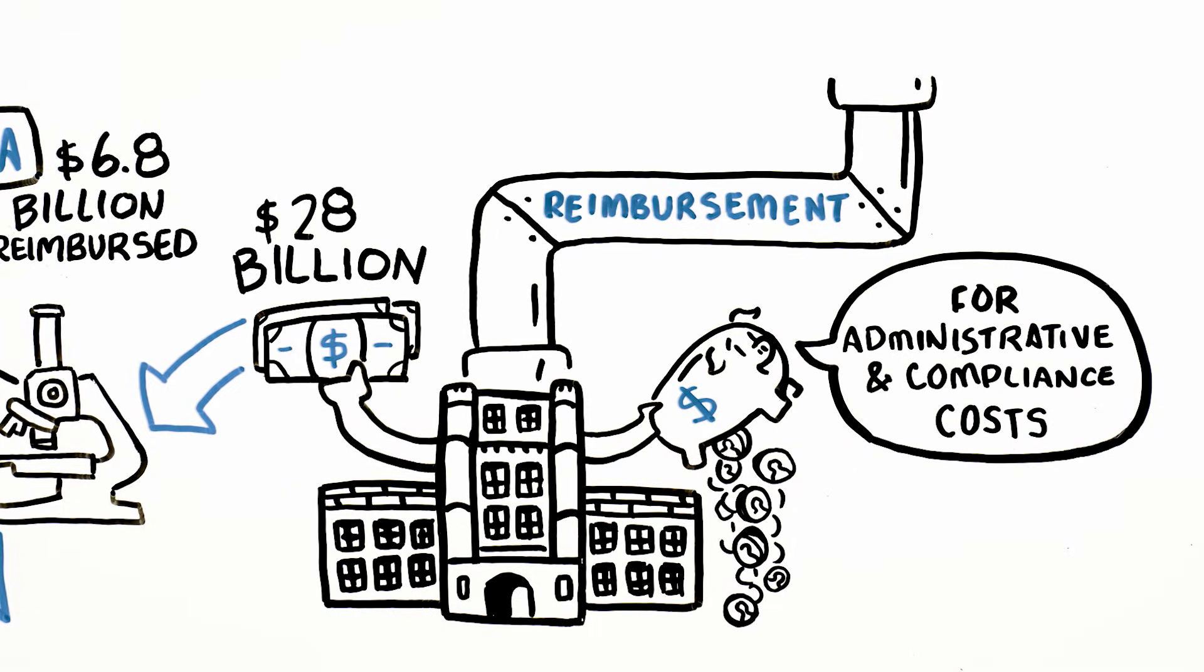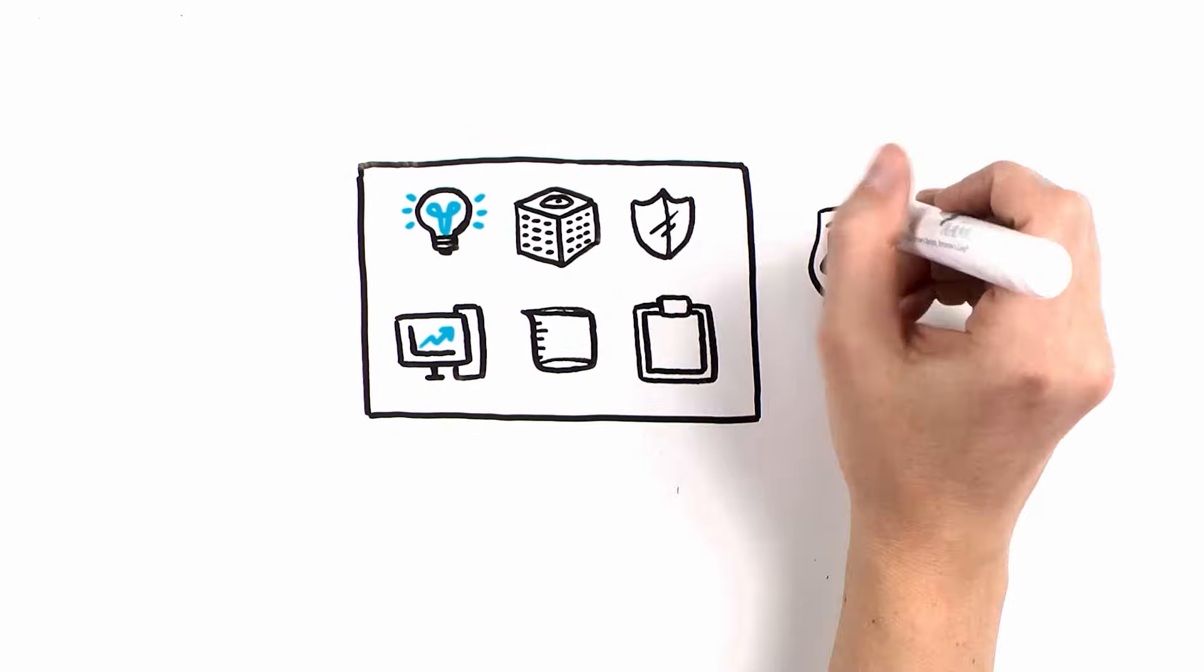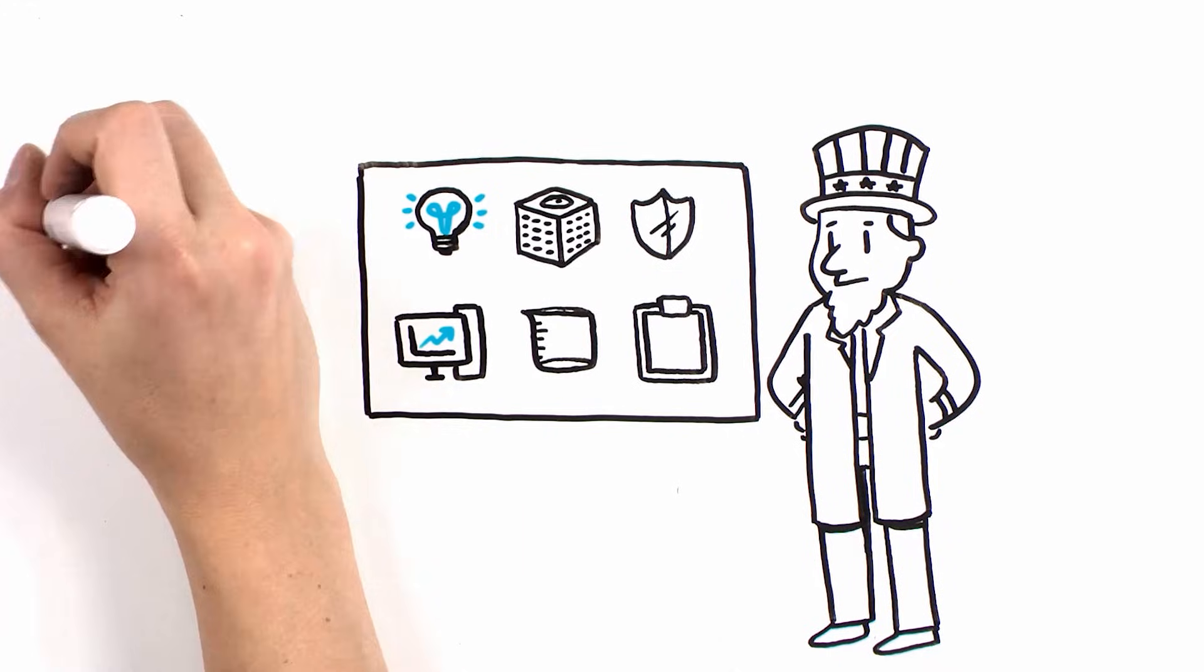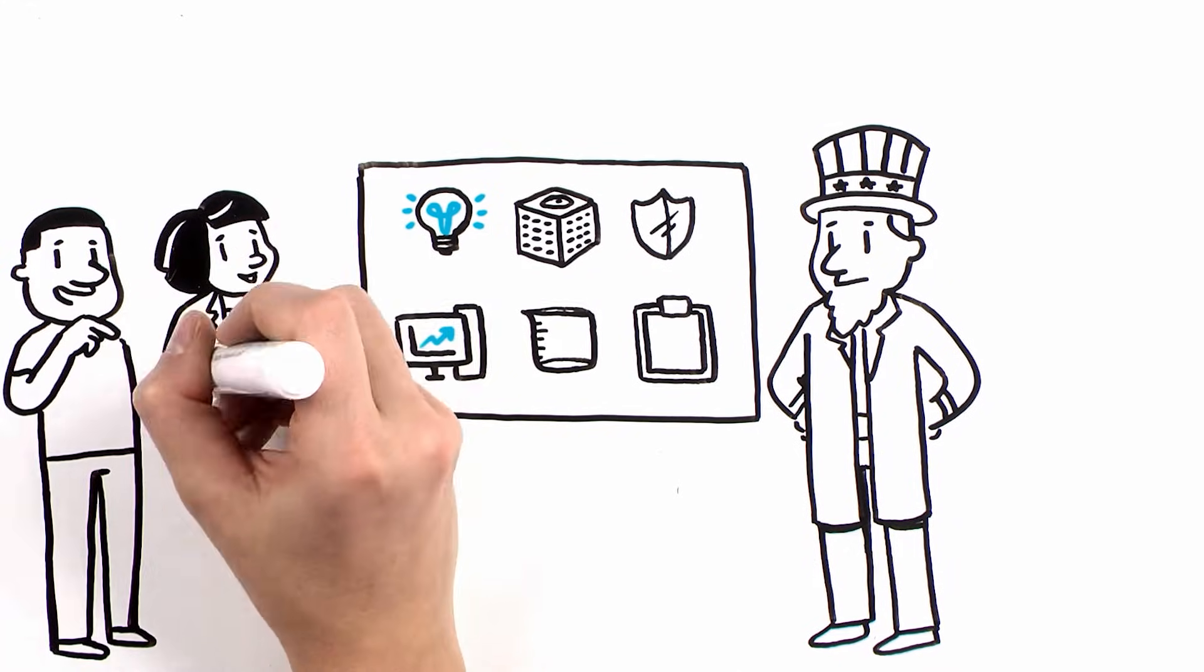associated with the government research they conduct. This is due in part to an exacting F and A cost rate negotiation process with the government that requires institutions to scrupulously identify and defend costs eligible for reimbursement.